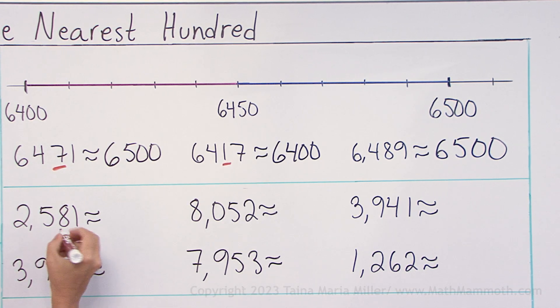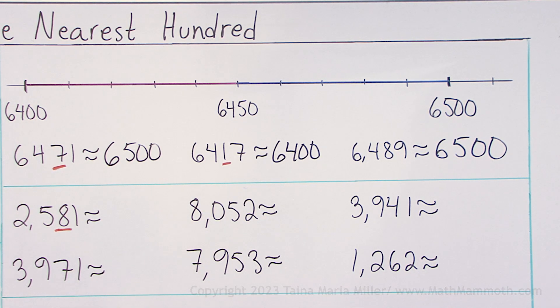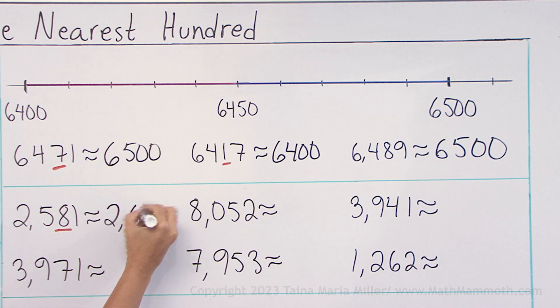2581. Here's the tens digit, 8. Round up. So the next whole hundred would be 2600.